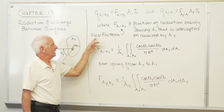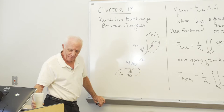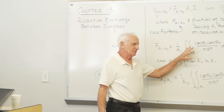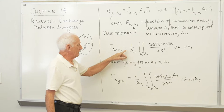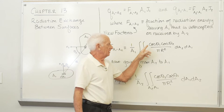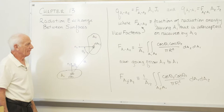Those F factors are called view factors. Mathematically, here's how you would find a view factor. The book derives this — we're not going to go into that lengthy derivation — but here is the equation: 1 over A1 times a double integral over A1 and A2. Numerator: cosine theta 1 times cosine theta 2. Denominator: pi R squared. Then dA1 dA2 — a double integral, rather complex obviously.